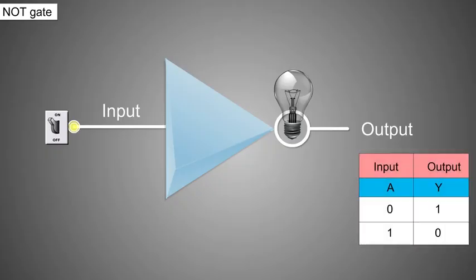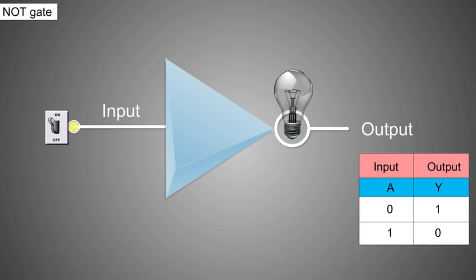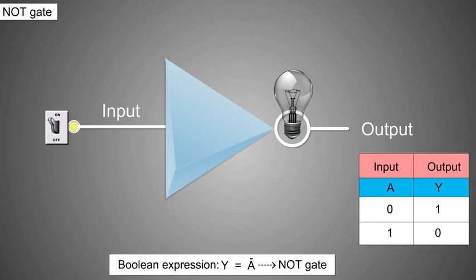Let's start with the most basic gate — the NOT gate. This gate has one input and one output. It produces a 1 output if the input is 0, and vice versa. That is, it produces an inverted version of the input at its output, and is also known as an inverter. The commonly used symbol together with the truth table for the NOT gate is as shown.